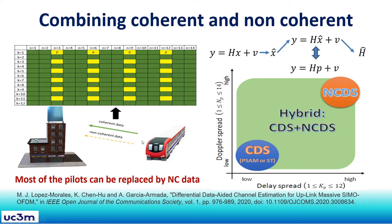In this hybrid scheme, if the delay spread or Doppler spread is very low, we would use the coherent scheme with pilot symbol assisted modulation or superimposed training. If the Doppler spread or delay spread is high, we go directly for the non-coherent scheme, but in between we could use this hybrid proposed scheme. This proposal is further explained in the paper 'Differential Data and Channel Estimation for Massive SIMO with FDR,' published in the IEEE Open Journal of the Communications Society in 2020.